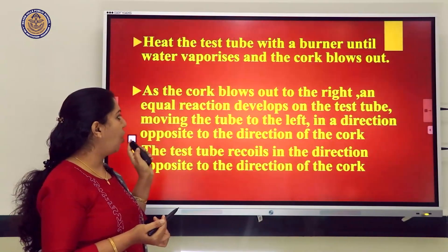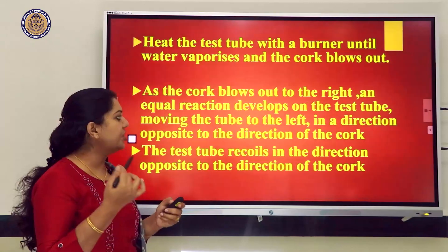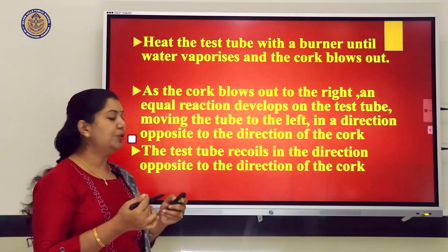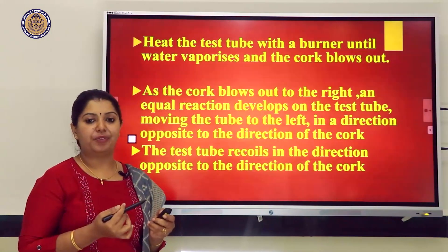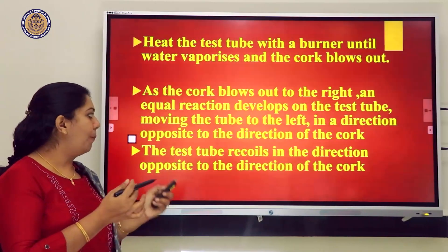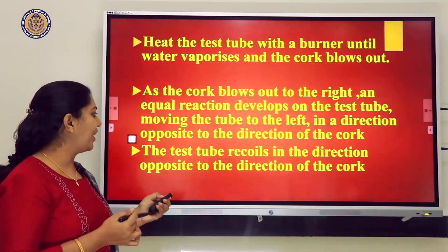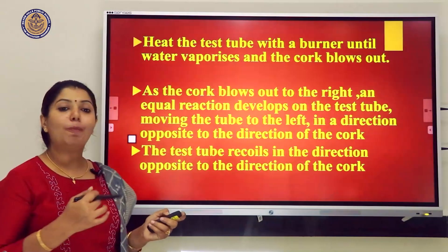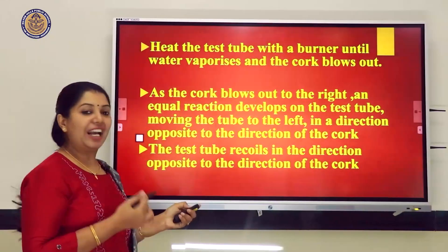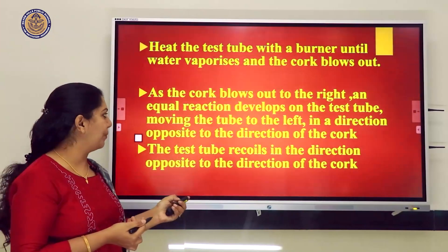As the cork blows out to the right, an equal reaction develops on the test tube, moving it to the left — in the direction opposite to the cork. The test tube recoils in the direction opposite to the direction of the cork, thus proving conservation of momentum.